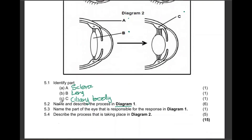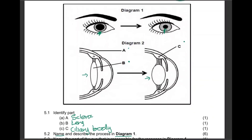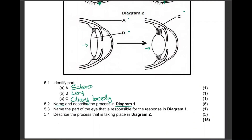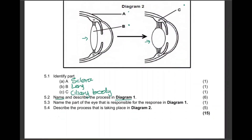Name and describe the process in diagram one. We have two diagrams showing two different conditions. Diagram one shows a change in the size of the pupil, and diagram two shows a change in the shape of the lens. So one is the pupillary mechanism and the other is accommodation. The process in diagram one is the pupillary mechanism.